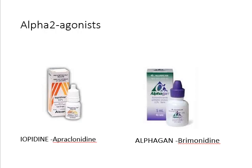Alpha-2 agonists don't have many systemic effects, but can cause dry mouth and lethargy. They can also aggravate depression similar to beta blockers, can interact with older-style antidepressants, and cannot be used in children.